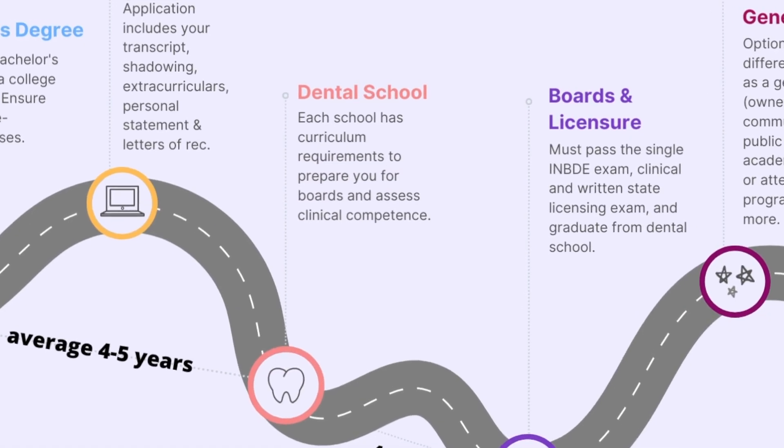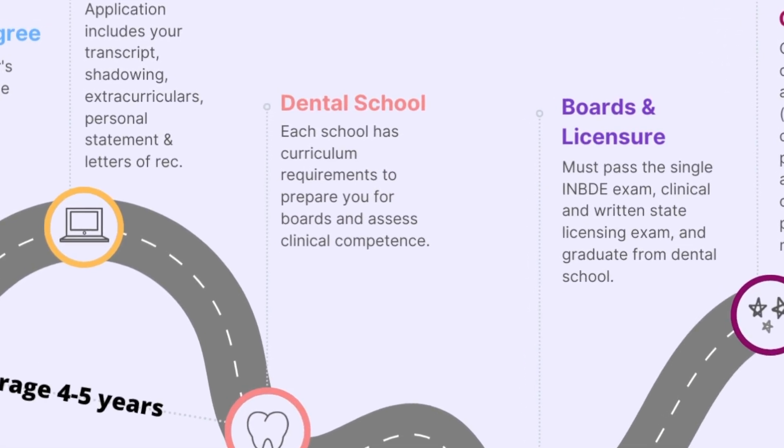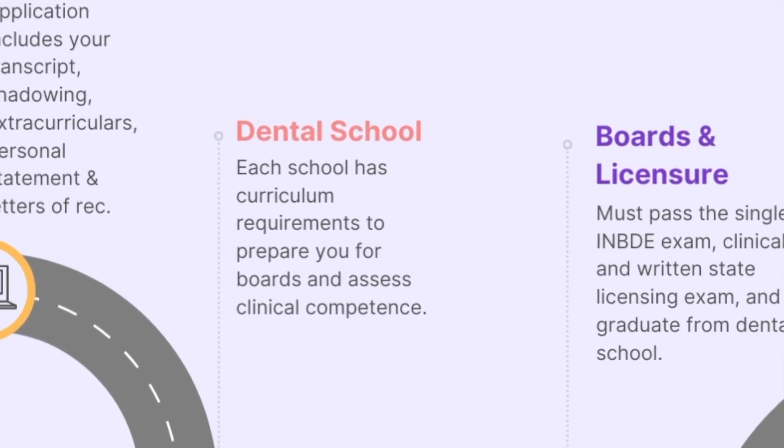However, there are two dental schools in the United States that will be offering three-year programs: University of the Pacific in San Francisco, California and Roseman University in Utah. During your four years of dental school, you're going to have various requirements set by your specific school, but there are some standards across every single dental school that every student will have to complete in order to obtain a dental license to practice as a general dentist.